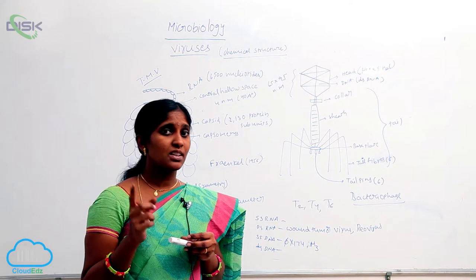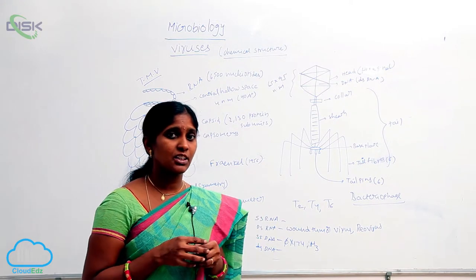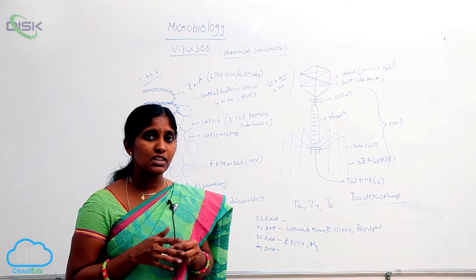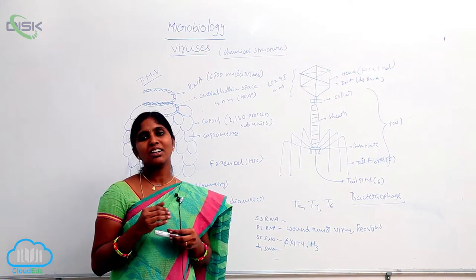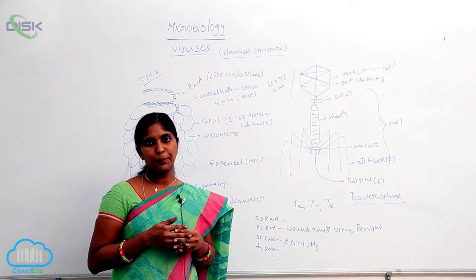Phytophages generally have the RNA as genetic material. Cauliflower mosaic virus, dahlia mosaic virus show the genetic material as DNA.